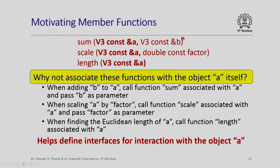For example, if I wanted to add a three-dimensional vector b to vector a, I could invoke the function sum associated with object a and pass vector b as a parameter. Similarly, if I wanted to scale vector a I could call the function scale associated with object a and pass the scaling factor as a parameter. And to find the length of vector a I could simply call the function length associated with object a. So associating functions with object a means these functions serve as interfaces for interaction with object a.